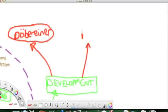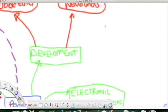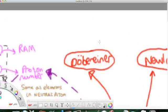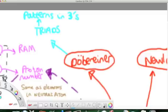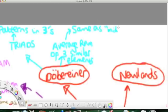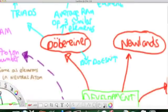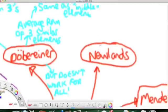So, Dobereiner, Newlands, and Mendeleev were the three main people that developed the periodic table to what it is today. Let's look at Dobereiner first of all. Dobereiner came up with the idea of triads, which are patterns in groups of three. He noticed if you took the average relative atomic mass of three similar elements, then it would be the same as the middle element in that triad. It didn't work for all elements, he found. And because of that, it was quite largely ignored.